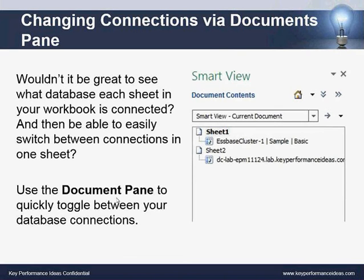Next, we'll talk about changing connections via the document pane. Wouldn't it be great to see what database each sheet in your workbook is connected to and then easily switch between those connections? You can use the document pane to quickly toggle between your database connections. To get there, click the little dropdown arrow next to the home icon and select document pane or document contents — now you can see each sheet in your workbook and which database it's connected to.